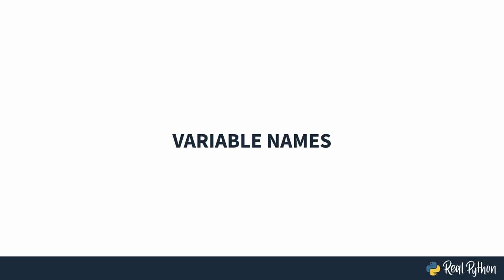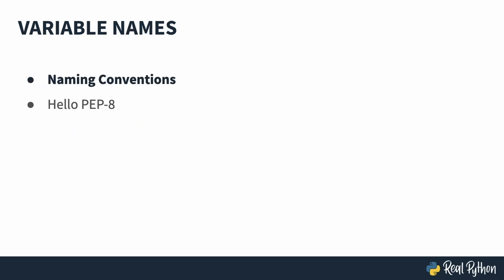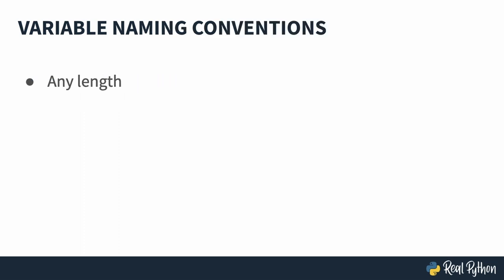Now that you know what variables are and that they are pointers to objects, in this section you're going to take a look at the different variable names that you can use, what the conventions are, and we're also going to take a quick look at PEP8. We are at section four of our course, talking about variable names. We're going to first look at the naming conventions and then peek into PEP8. Let's get started.